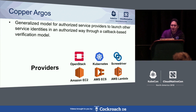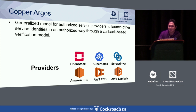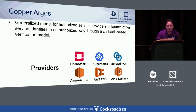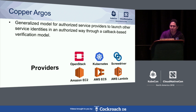Using certificate-based authentication can provide good security, but we still have a remaining question: how do we provision those certificates into our workloads? Athens provides a generalized model to bootstrap certificates into each pod or instance by doing a callback-based verification against authorized service providers. We call this model Copper Argus. Athens also supports adding SPIFFE ID, which is a standardized format of identity in the SAN field of the certificates, so any products which can identify other services with SPIFFE ID can be compatible with Athens.